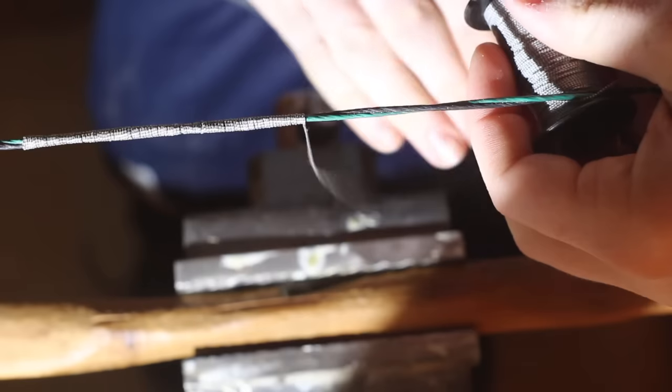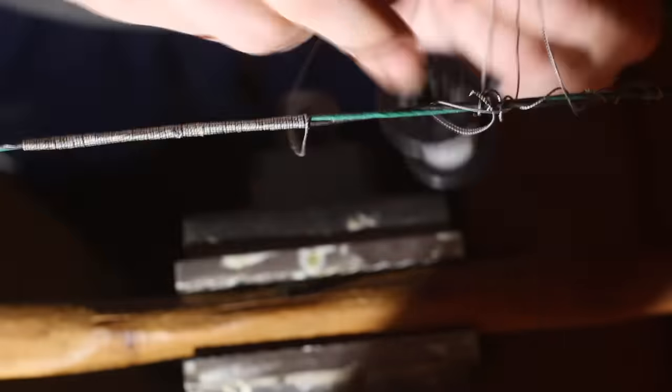Pass the serving through that 15 times and after that serving is passed through your big loop 15 times you're going to bring that back over top of the serving you already did.